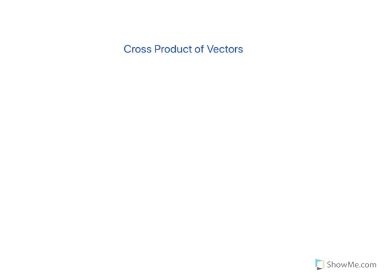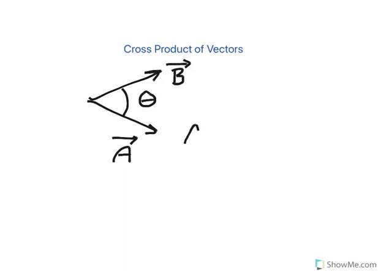Okay, today's lesson is about cross product of two vectors. So if you have two vectors, let's say vector A and then another vector, vector B, and if the angle between these two vectors is theta, cross product of two vectors...